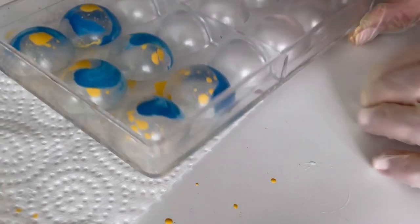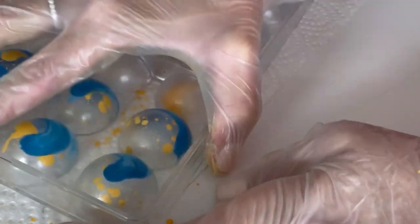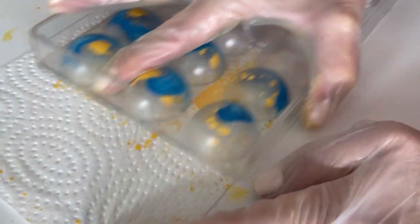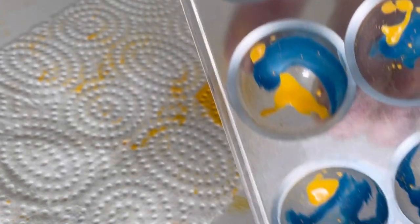I'm wiping down the mold using just a paper towel. This is a good idea to do in between each color. I'm going to pop the mold back in the fridge for another five minutes to set.